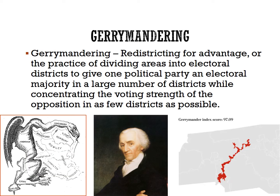When it comes to redistricting, equal representation is the most important goal, so each district must have approximately the same population. Other general rules apply: districts need to be compact, meaning fairly close together, and contiguous, or all in one piece. But since each individual state gets to decide how to redraw, state officials can manipulate boundaries to favor a political party, ethnic group, or religion. This is known as gerrymandering — redistricting for advantage — or the practice of dividing areas into electoral districts to give one political party an electoral majority in a large number of districts while concentrating the opposition's voting strength in as few districts as possible.